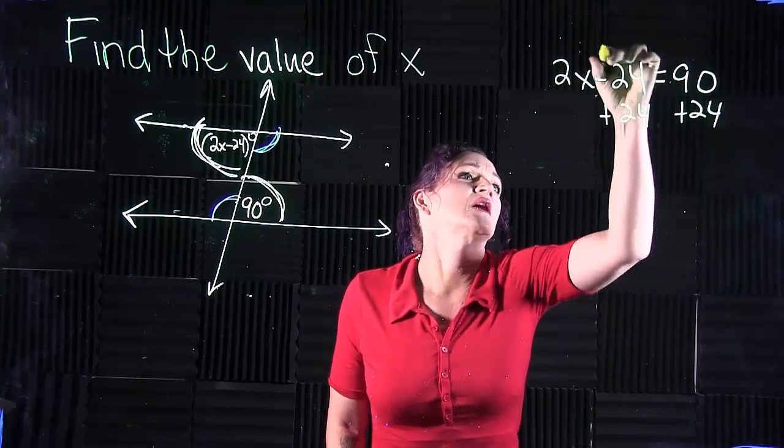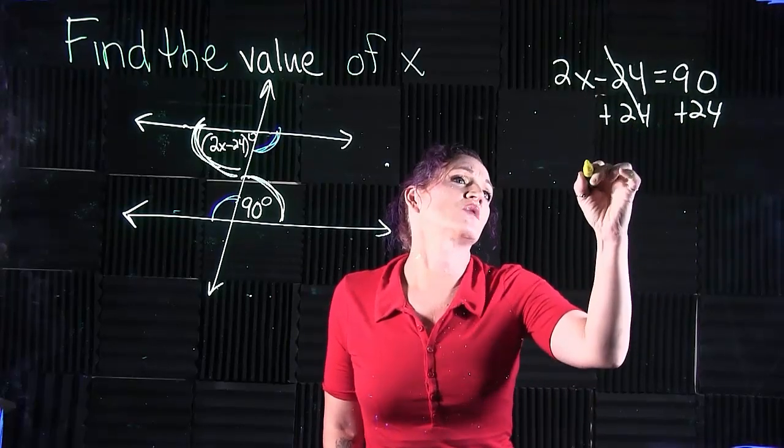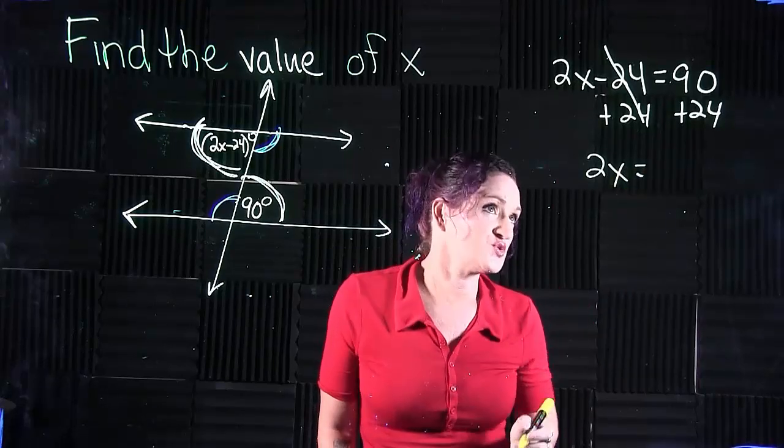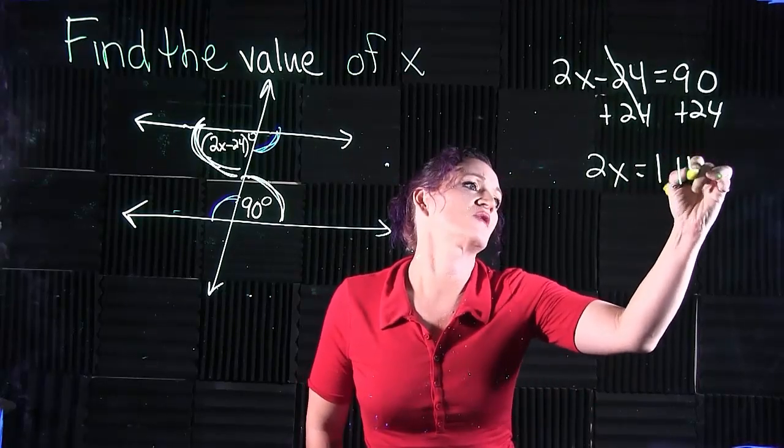we're going to add that 24 over to the other side, canceling the 24 on the left, giving us 2x equals 114.